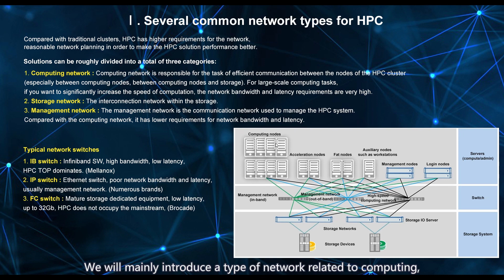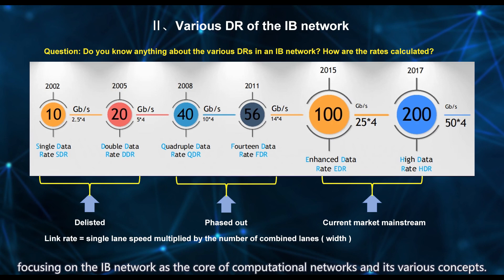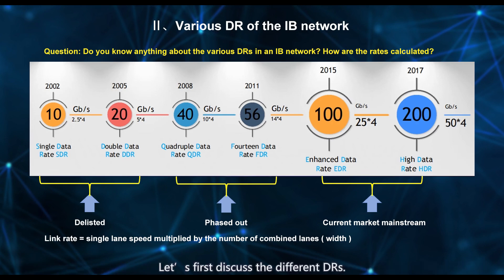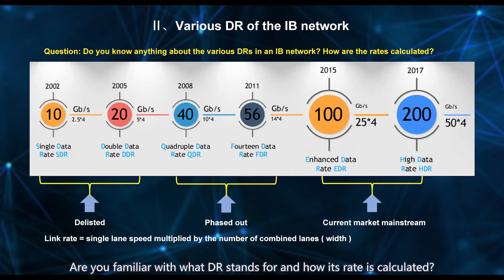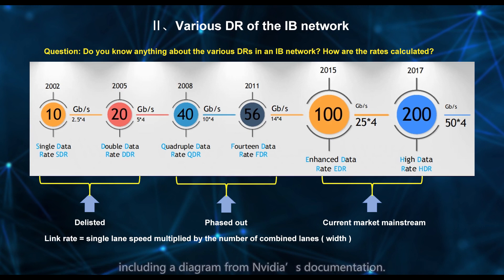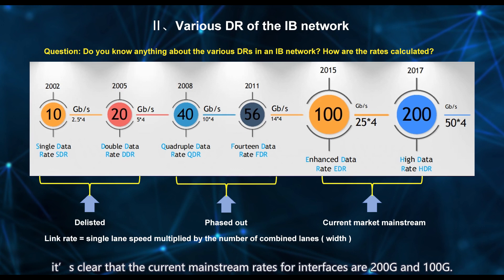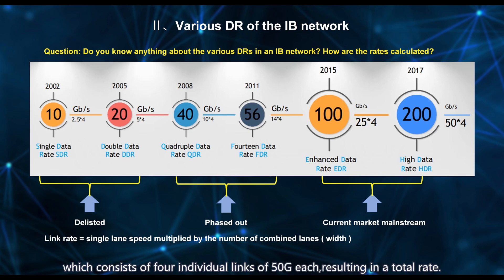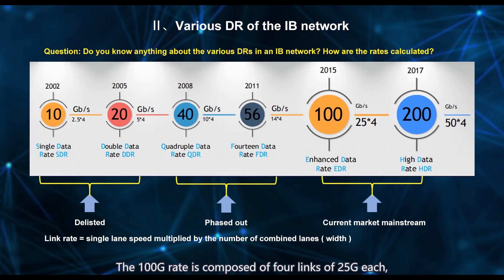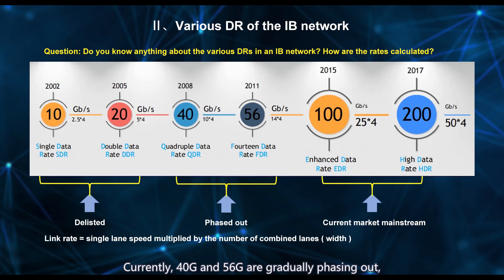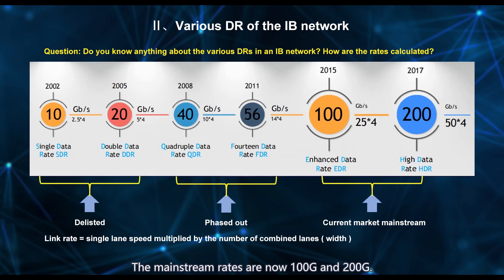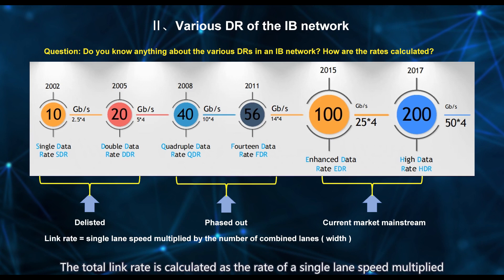We will mainly introduce a type of network related to computing, focusing on the IB network as the core of computational networks and its various concepts. Let's first discuss the different DRs. From a timeline perspective, the current mainstream rates for interfaces are 200G and 100G. HDR stands for high data rate, which consists of four individual links of 50G each, resulting in a total of 200G. The 100G rate is composed of four links of 25G each, and the 56G rate is made up of four links of 14G each. Currently, 40G and 56G are gradually phasing out, and the mainstream rates are now 100G and 200G. The total link rate is calculated as the rate of a single lane speed multiplied by the number of links.